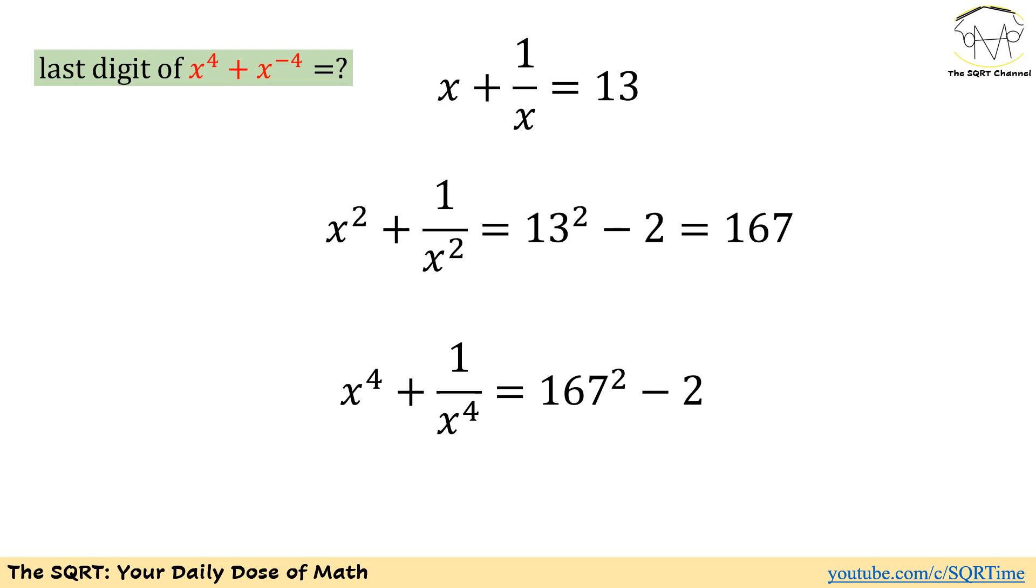Now after a simple rearrangement we will have x squared plus 1 over x squared equals to 13 squared minus 2 which is 167.